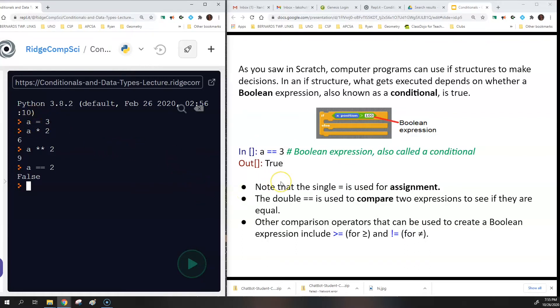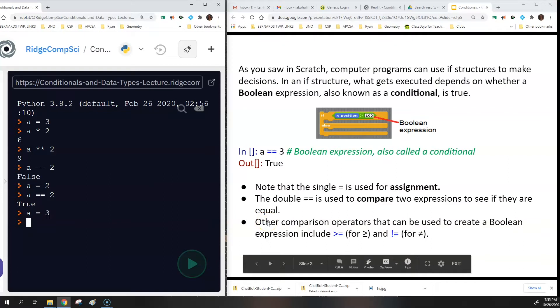So now if I did something like A equals 2, now A has the value of 2. So it doesn't have the value of 3 anymore. So then if I did A equals equals 2, then it would be true because I took the value of A, which was originally 3, and I changed it to 2. Now if you're not sure what A is, you can always just type A and it'll tell you what it is.